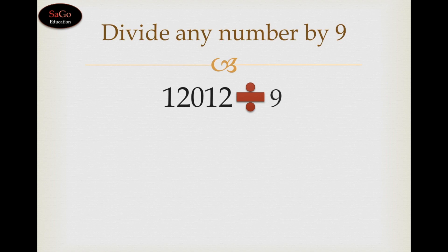Now we would write the first digit of the dividend as it is, which is 1. This 1 would be added to the next digit, that is 2. 1 plus 2 is 3, write 3. Now this 3 would be added to the next digit which is 0. 3 plus 0 is 3, write 3.